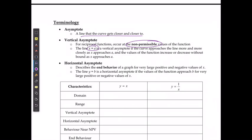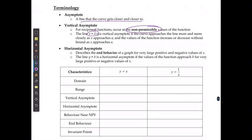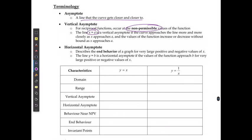The horizontal asymptote describes the end behavior of a graph for very large positive and negative values of x — meaning as x approaches positive or negative infinity. It is stated in the form y is equal to b, where b is the horizontal asymptote of the function.